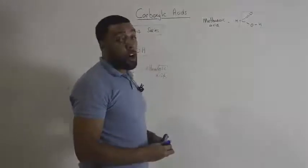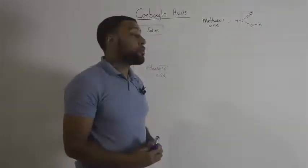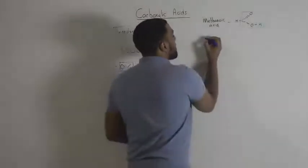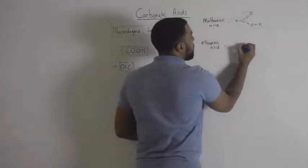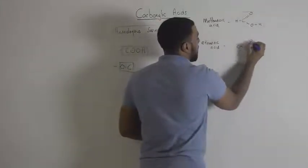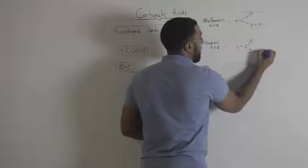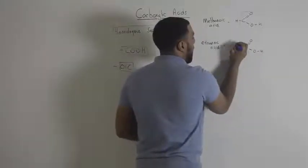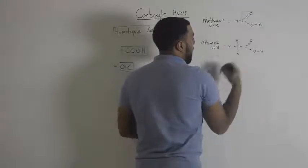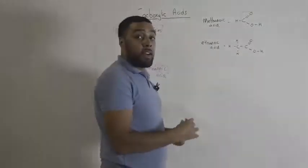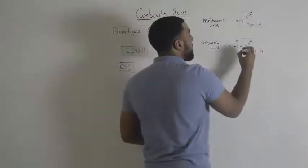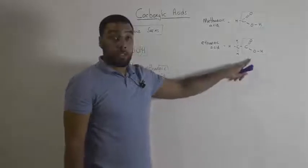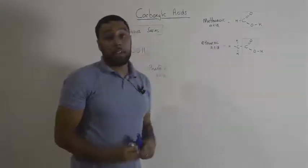The second carboxylic acid you guys should recognize is ethanoic acid. Ethanoic acid has two carbons in its chain. You can see again that we have the same functional group telling us it belongs to the homologous series of carboxylic acids.